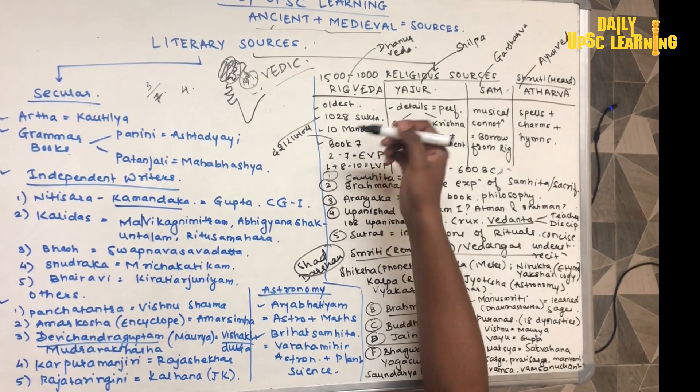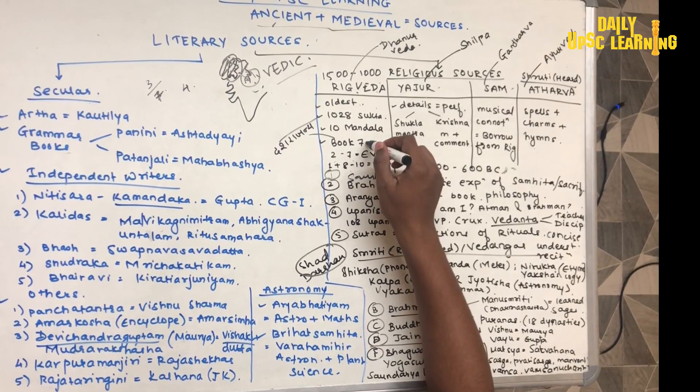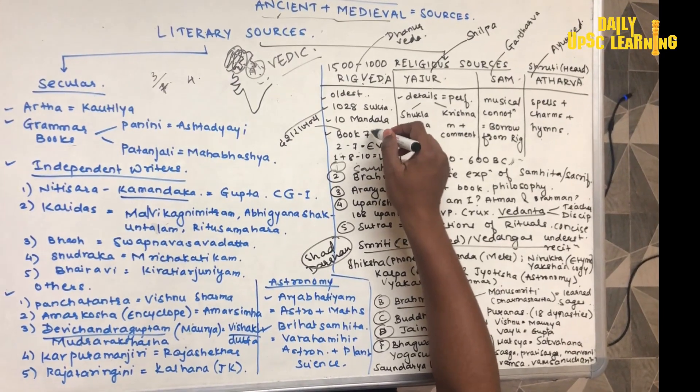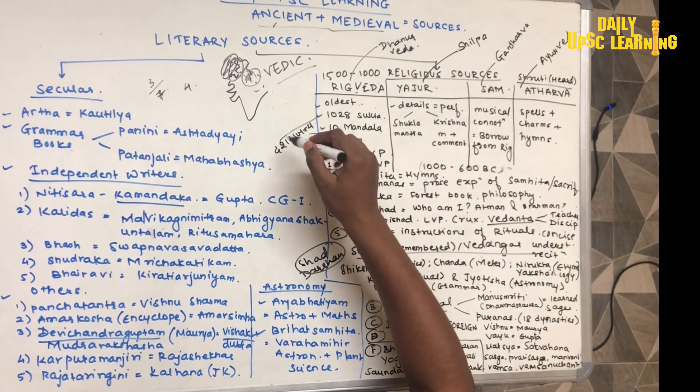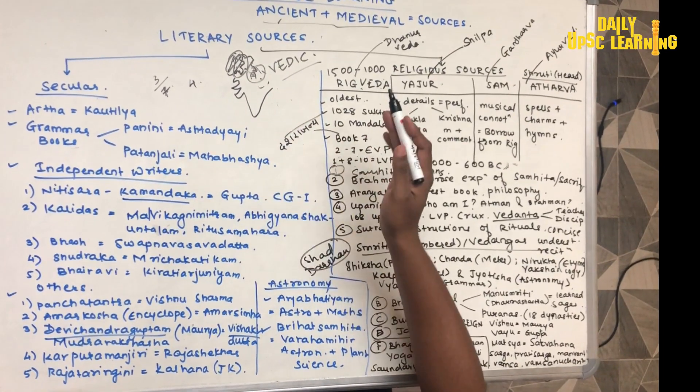You will remember that book 7 includes the Battle of Dashrajan, that is the Battle of 10 Kings.